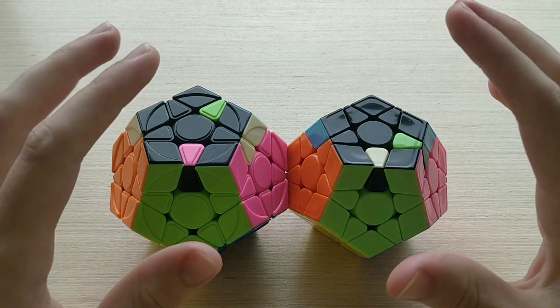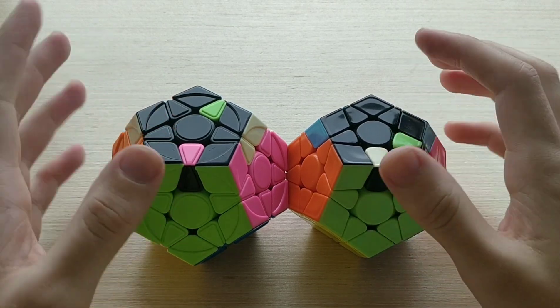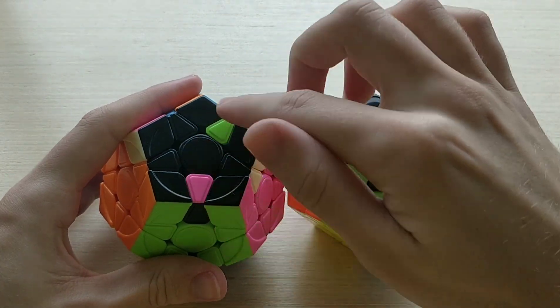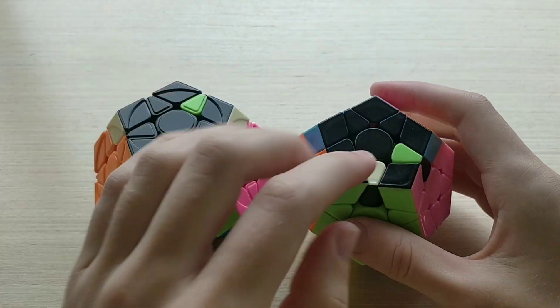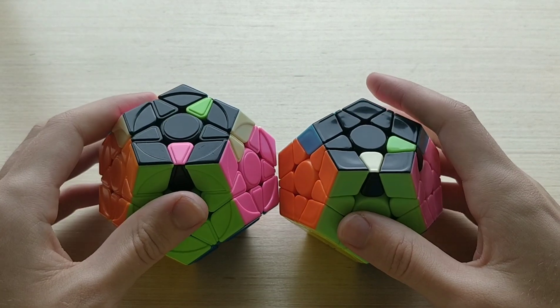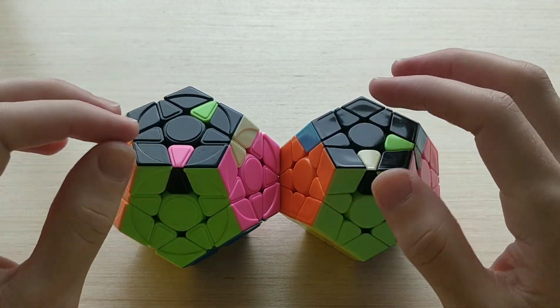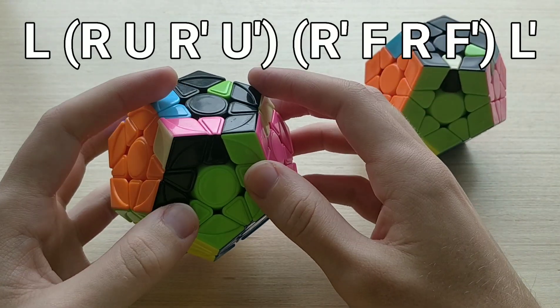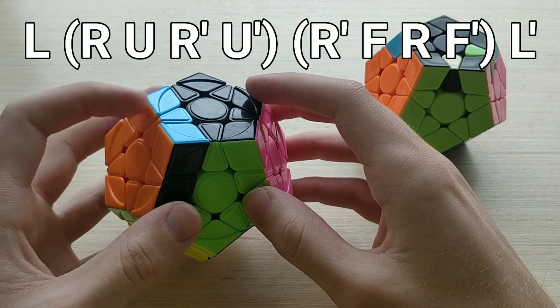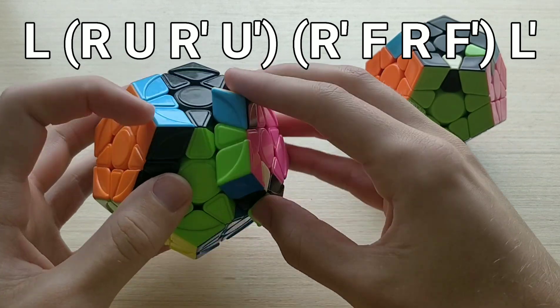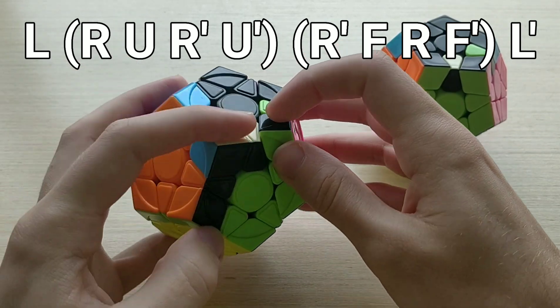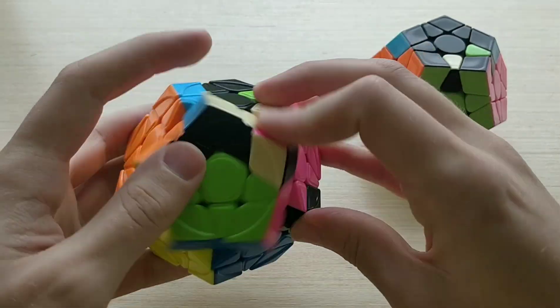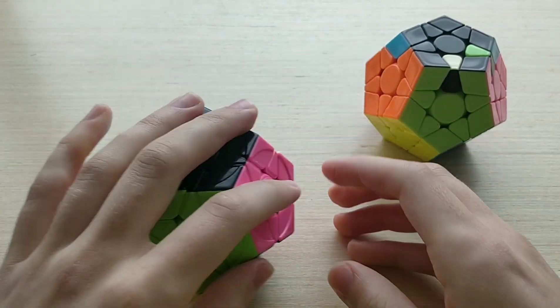And finally, we have set 1, so these are the edge-only OLLs. So again, super easy to recognise. For 1a here, we have two edges across from one another that need to be oriented, and in 1b we have two adjacent edges that need to be oriented. So like I said before, these are just slight modifications of 3x3 transfers. So for 1a, we're going to do l, and then sexy sledge, and then l prime. So a little bit slower, looks like that. And a little bit faster, there, looks like that.